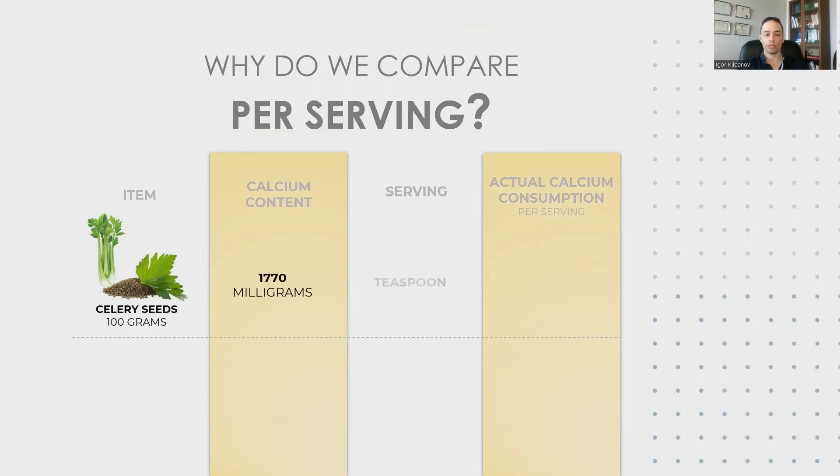A typical serving for seeds is counted in teaspoons. A teaspoon is only five grams, not 100 grams. So how much calcium would you get if you were to eat a teaspoon of celery seeds? Only about 89 milligrams.